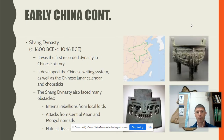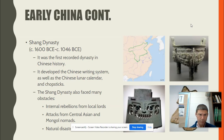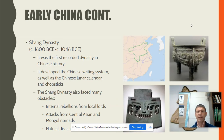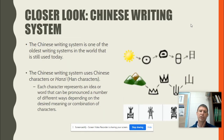That brings us to the first actual dynasty we have record of, and that is the Shang dynasty. They developed a writing system, a calendar, and even the use of chopsticks. You're going to see a lot about the Chinese and their inventions. You won't have to know specific dynasties in detail, but knowing their names is kind of important.